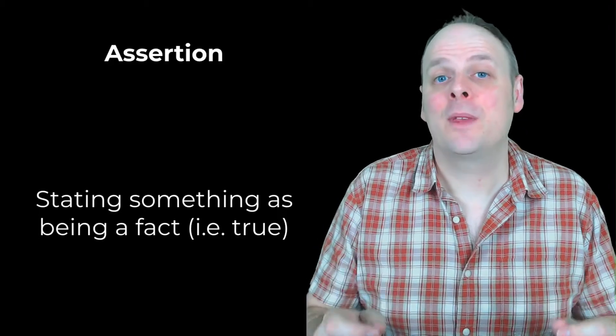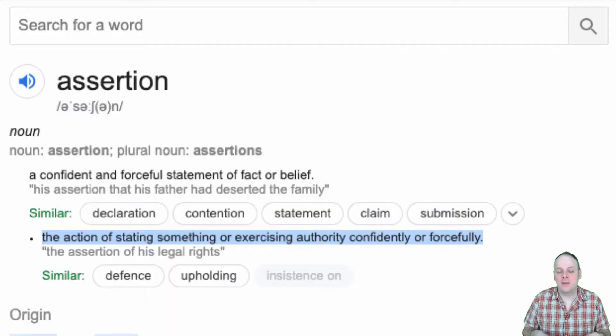An assertion is stating something as a fact. This is the dictionary definition of the word assertion. It says the action of stating something or exercising authority confidently and forcefully. When you're writing that down in a unit test, you're saying this is what I believe to be true of the world at this stage in time. It's an absolute belief that you hold, a conviction.